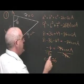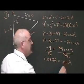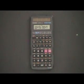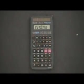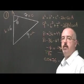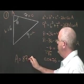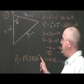0.0476 equals cos A. To find angle A, we take the inverse cosine: shift cos of 0.0476 equals 87.2706 degrees. Therefore, angle A is equal to 87.2706 degrees. Don't forget the degrees — that is your unit of measure.